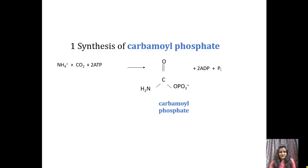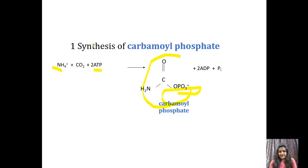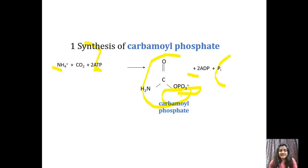In the first step, ammonia reacts with carbon dioxide and 2 ATP to form carbamoyl phosphate. From the 2 ATP, 2 ADP are formed. One phosphate is liberated and the other becomes part of the carbamoyl phosphate structure.